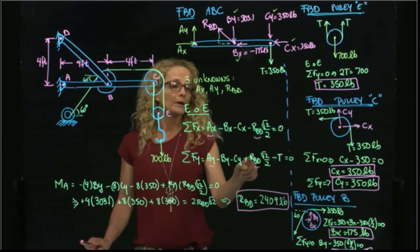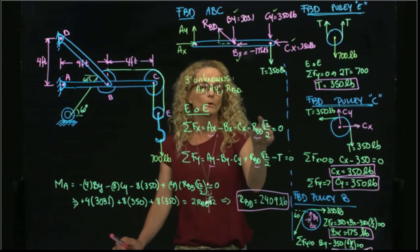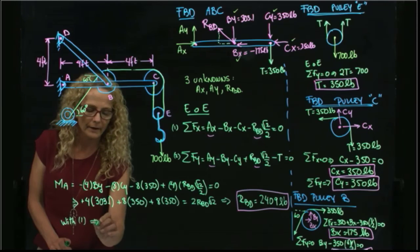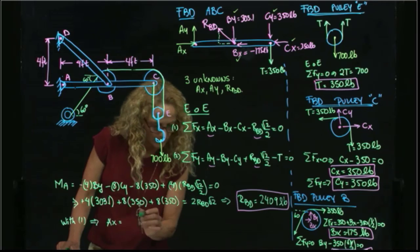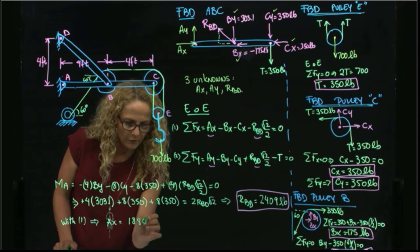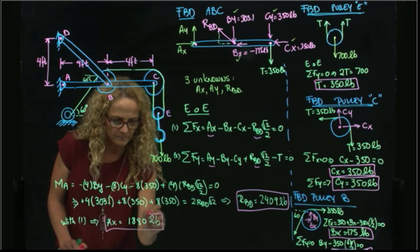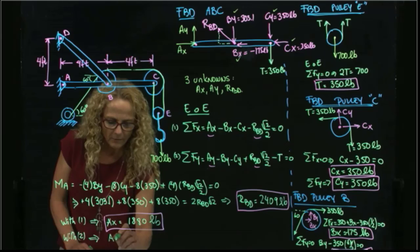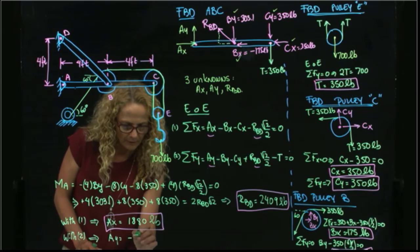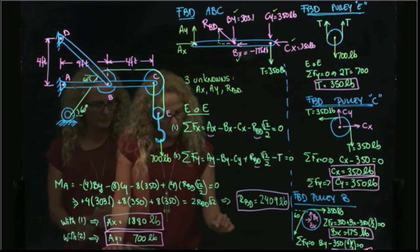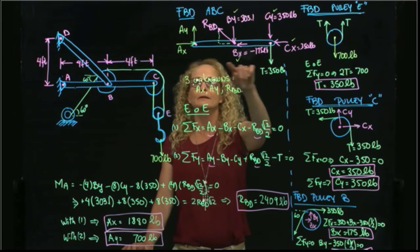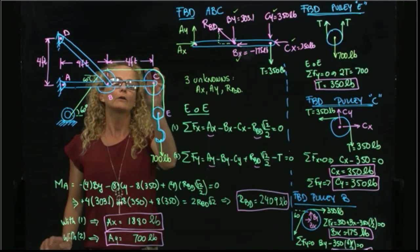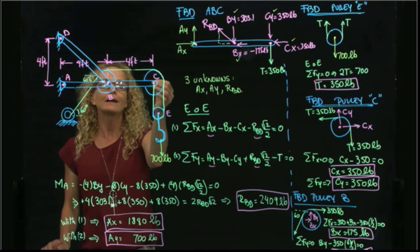Plugging RBD back into the force equations: from the X equation, Ax equals 1,880 pounds. From the Y equation, Ay equals negative 700 pounds in that direction — so it acts positively in the chosen sign convention. We were able to find all reactions in this free body diagram, including the reaction along the weightless link and the reactions from the pulleys transmitted through the pins to the beam.